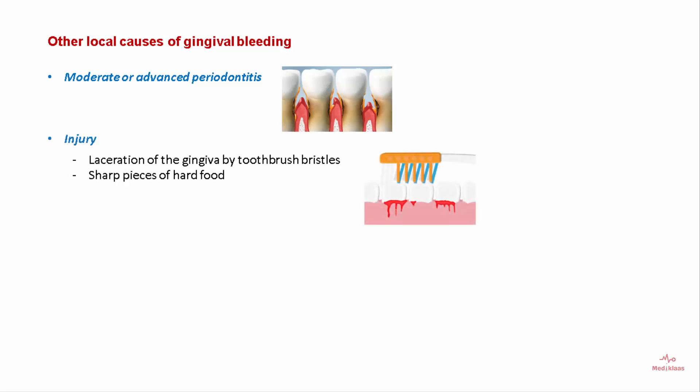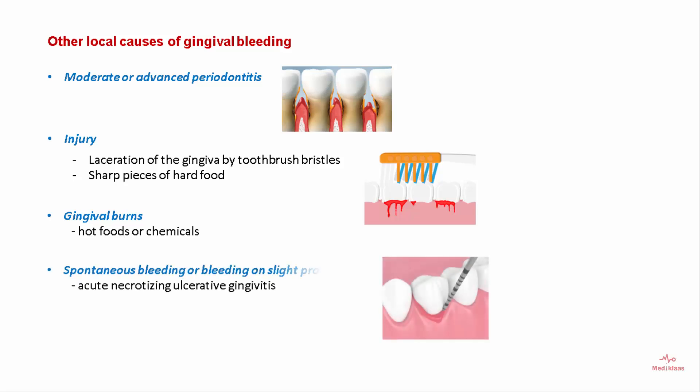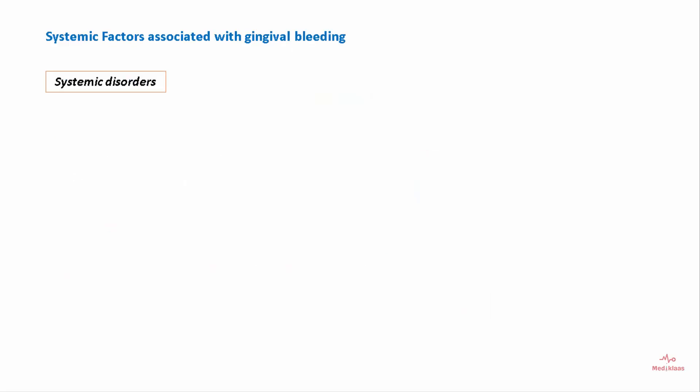Other local causes of gingival bleeding include moderate or advanced periodontitis, injury to the gingiva in the form of laceration by sharp objects or a toothbrush, gingival burns due to hot foods or chemicals, and spontaneous bleeding in conditions like acute necrotizing ulcerative gingivitis (ANUG).